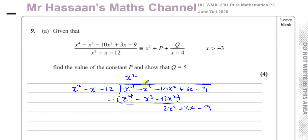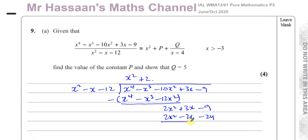2x squared — x squared times 2 gives us 2x squared, so I'm just going to put plus 2. You're going to end up with 2 times x squared, which is 2x squared; 2 times minus x, which is minus 2x; and 2 times minus 12, which is minus 24.